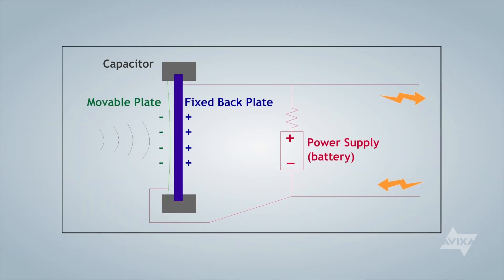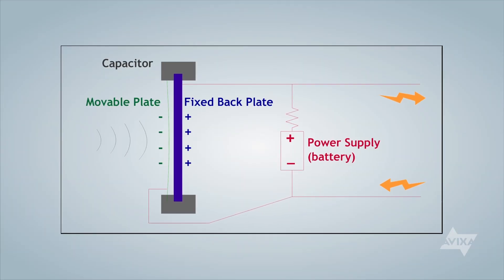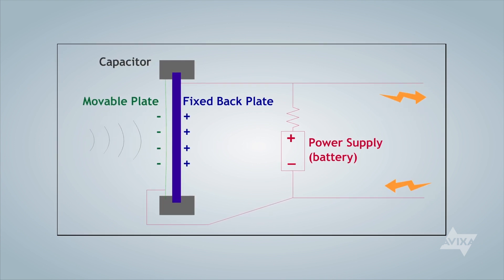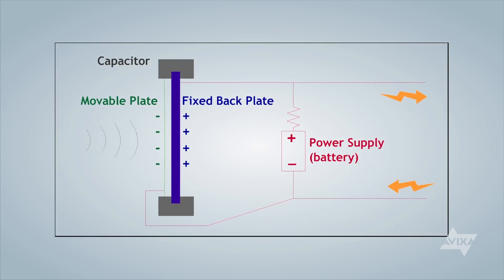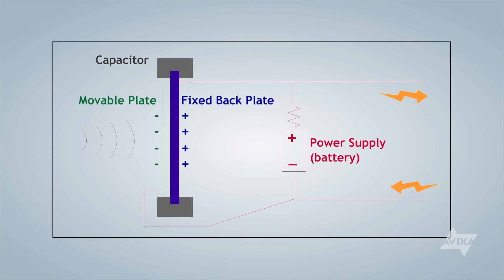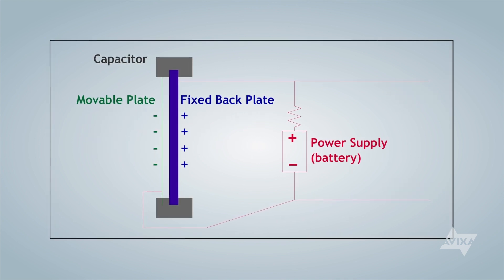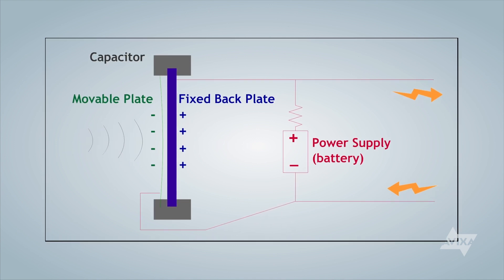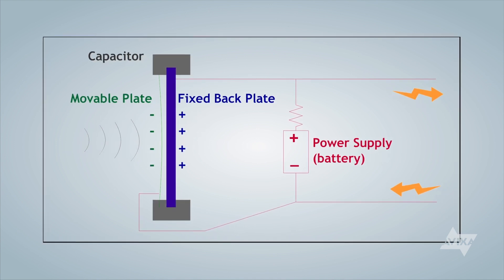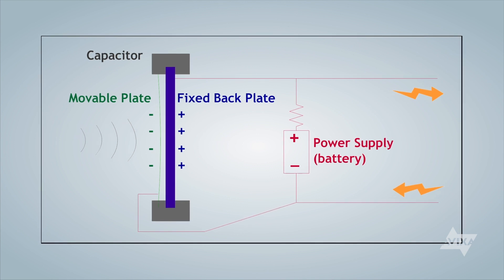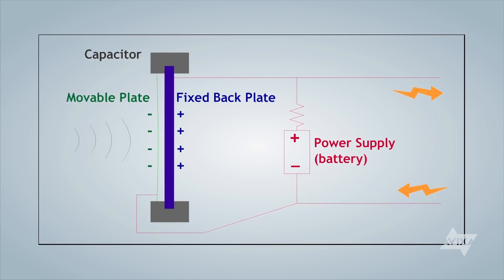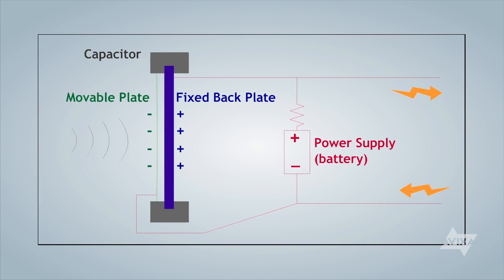Condenser microphones have a conductive diaphragm and a conductive backplate. Air is used as the insulator to separate the diaphragm and the backplate. In a condenser microphone, sound waves cause the diaphragm to move back and forth, subsequently changing the distance between the diaphragm and the backplate. As the distance changes, the amount of charge or capacitance stored between them changes, producing an electrical audio signal at the output of the capsule.